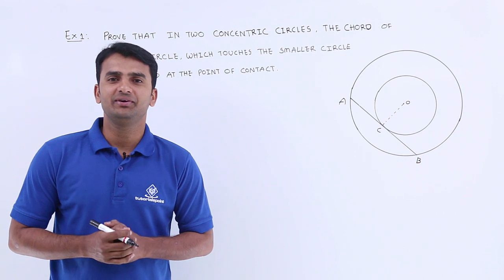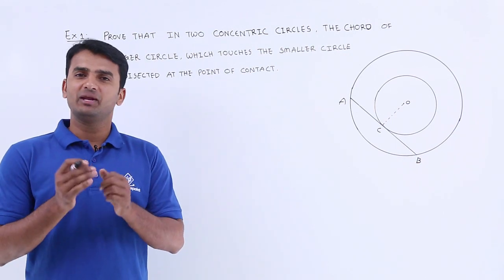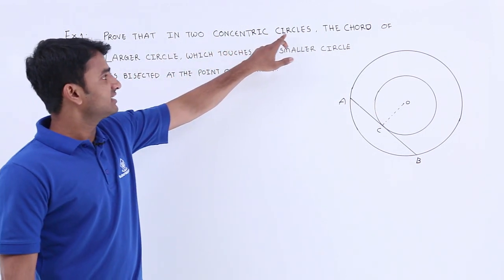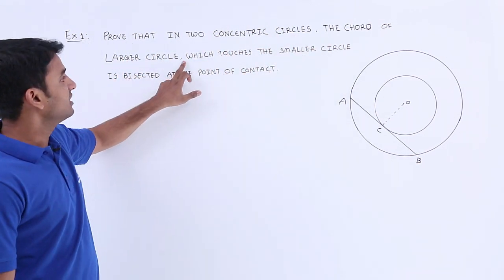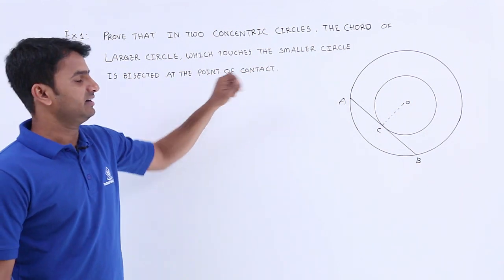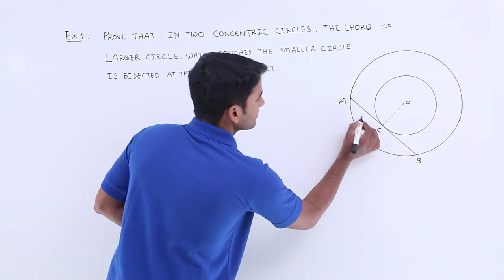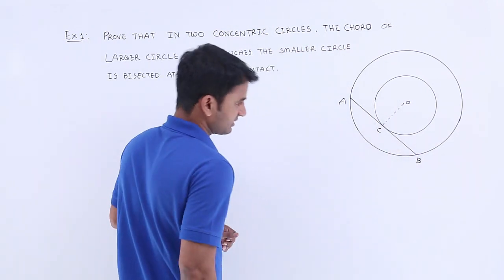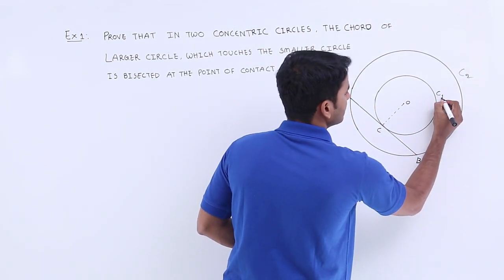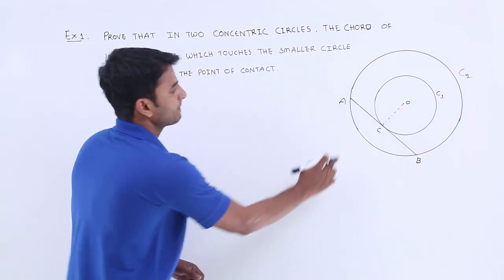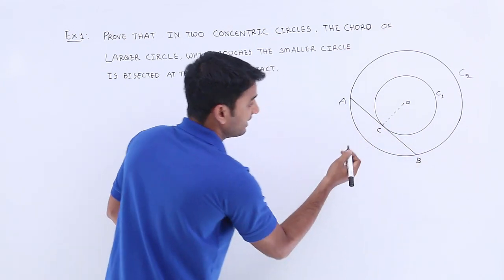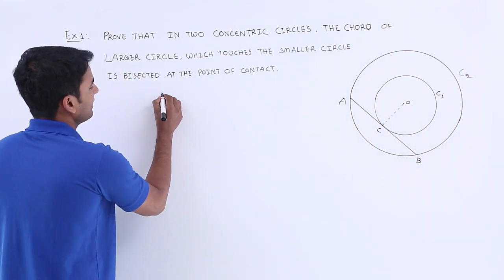In this video we are going to deal with example number one. It says: prove that in two concentric circles, the chord of the larger circle which touches the smaller circle is bisected at the point of contact. Here this is a chord of the larger circle. Let's consider the larger circle as C2 and the smaller circle as C1. This chord is bisected at point C, and we have to prove AC is equal to BC.